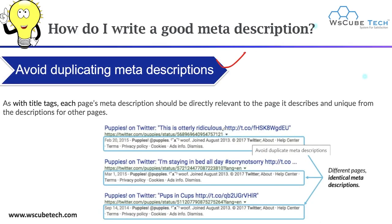As you can see in this example, we have different pages but all of them have the same meta description — this is a practice to avoid. You have to use separate meta descriptions for different pages. For each individual page, you must have a unique title and a unique meta description, because unique descriptions and titles make your web page unique and help optimize it. Each page's meta description should be directly relevant to that page and unique from descriptions for other pages.